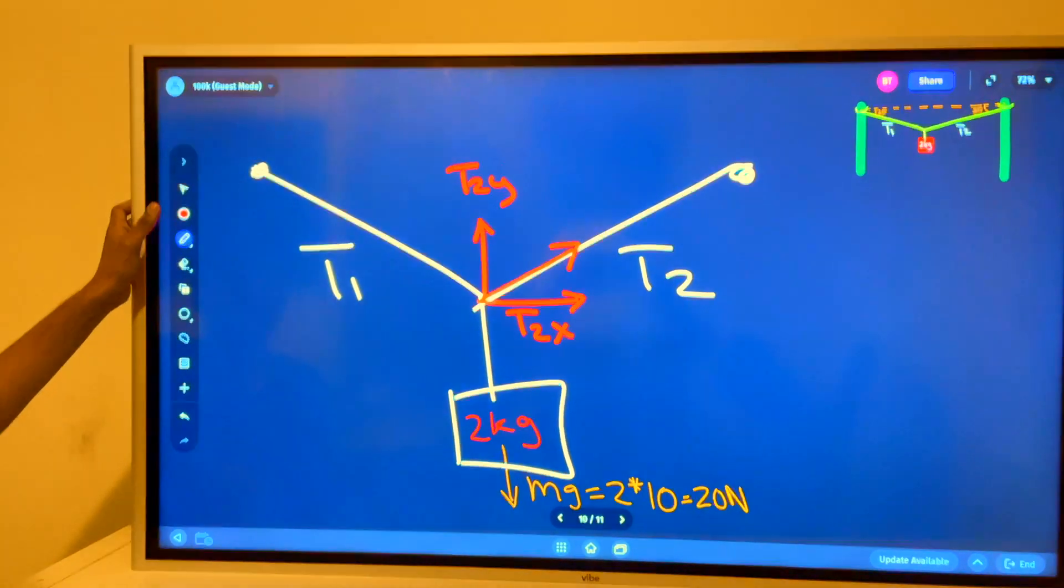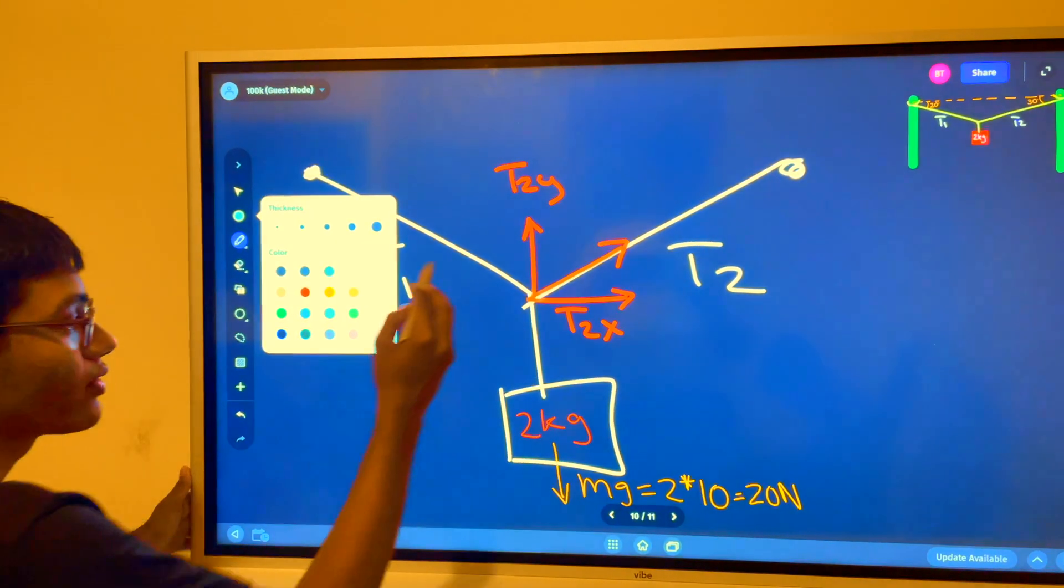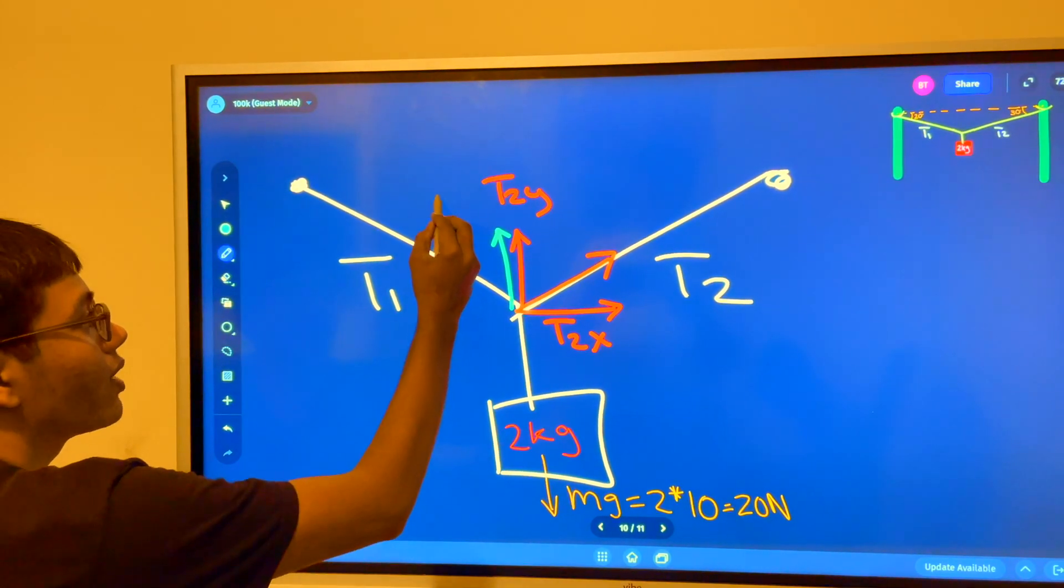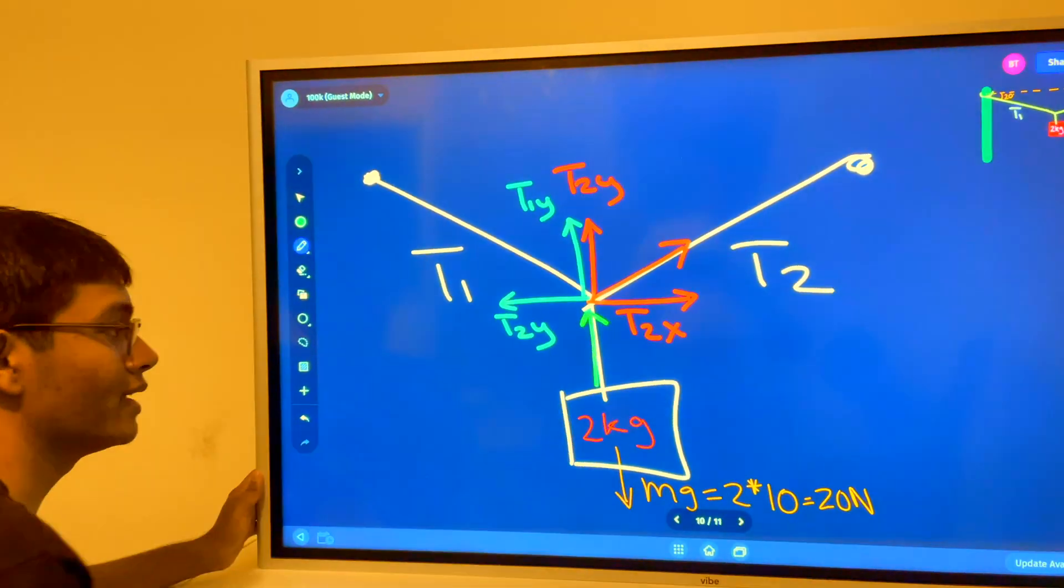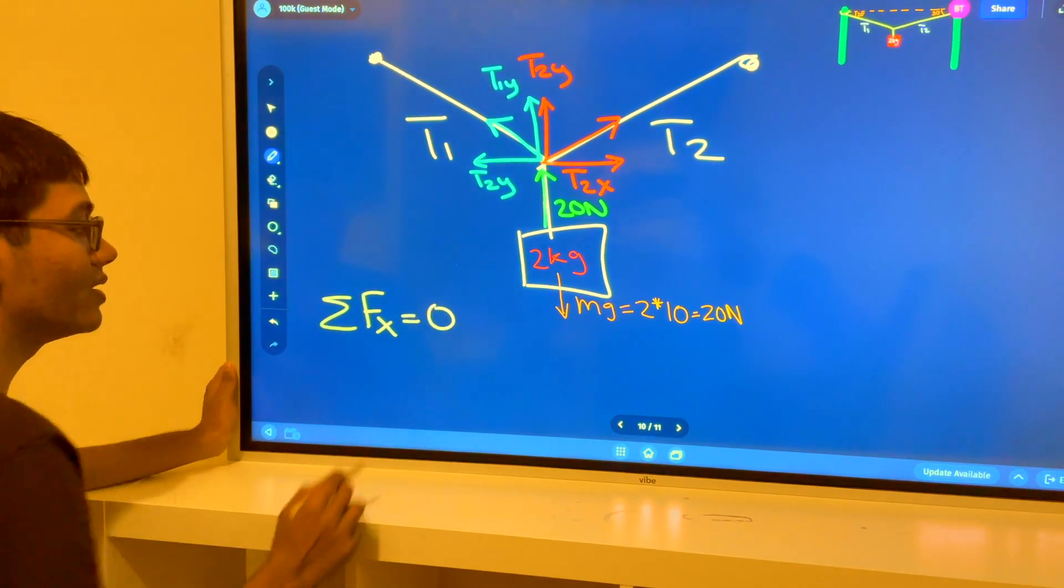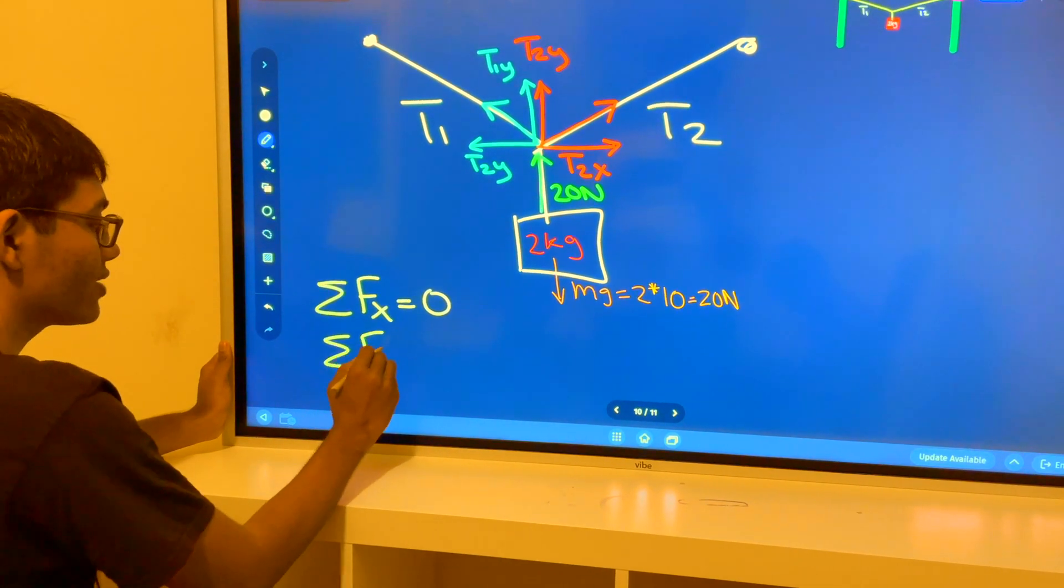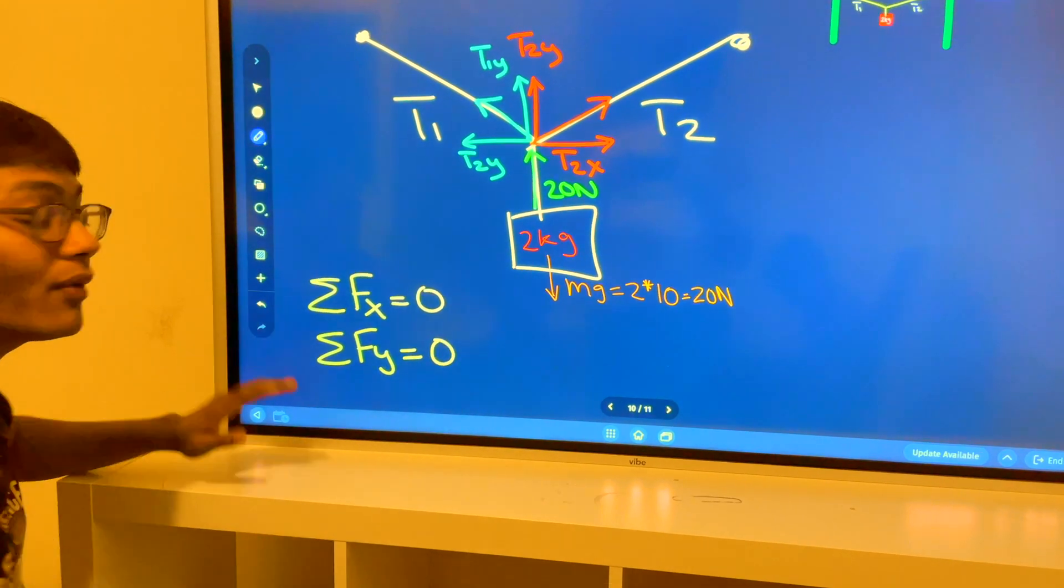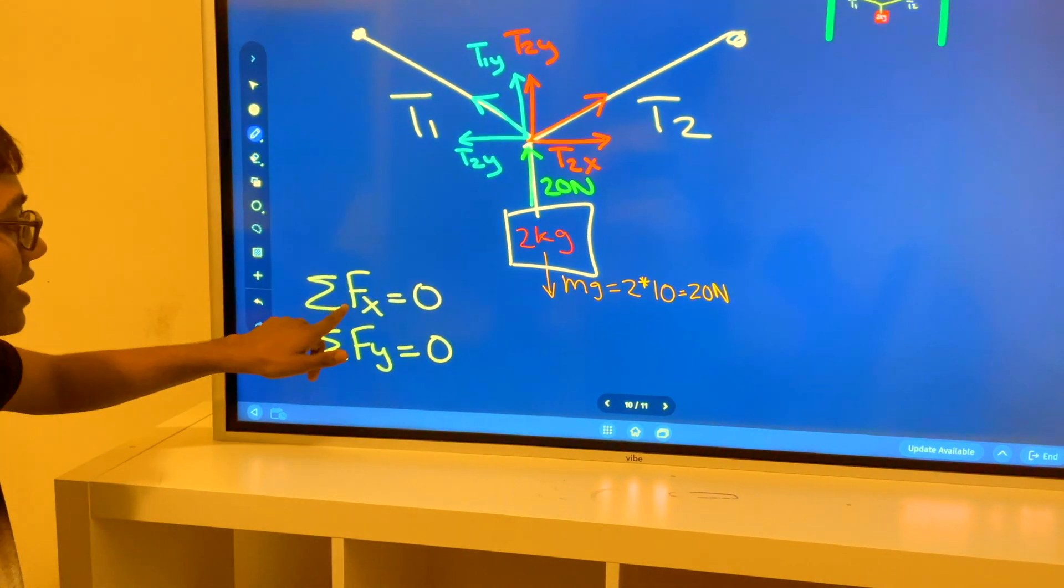Well, for our first rope, T2, we can decompose it into two components, the x component, T2x, and the y component, T2y. For our second rope, T1, we can decompose it into the y component, T1y. The net force in the x direction is going to be 0, stable in the horizontal direction, as well as in the vertical direction. It's not moving in the vertical direction. And now I can start using this to my advantage.